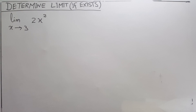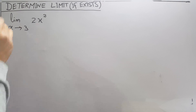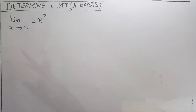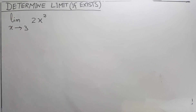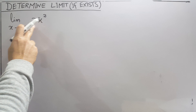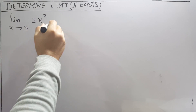In this video we will determine the limit if the limit exists. The first question is: limit as x approaches 3 of 2x squared.